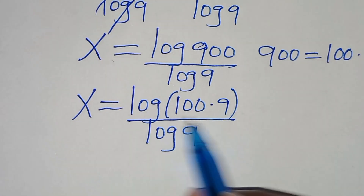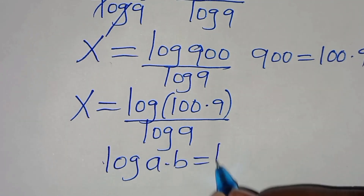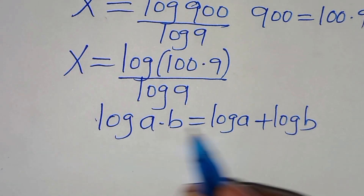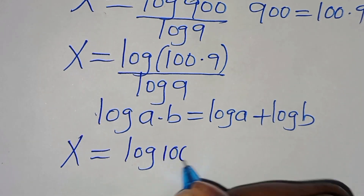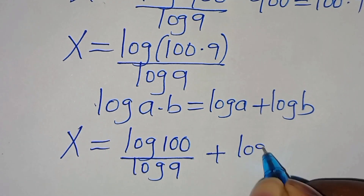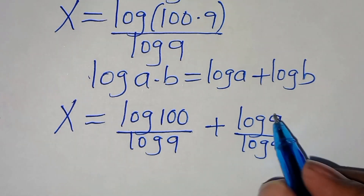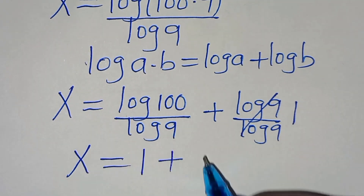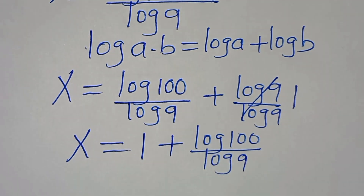The next step is that log(100 times 9) is in the form of log(a times b), which we can express as log a plus log b. By applying this logarithm product property, we can express x as log 100 divided by log 9, then plus log 9 divided by log 9. Simplifying log 9 over log 9 gives 1, so now we have x equal to 1 plus log 100 divided by log 9.